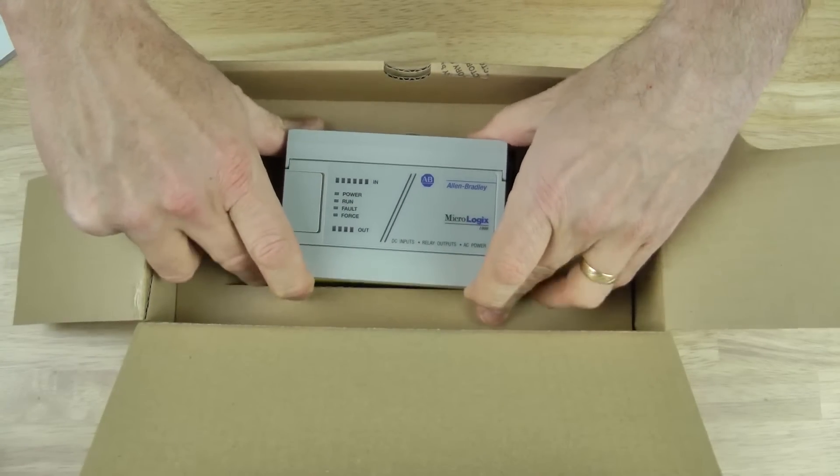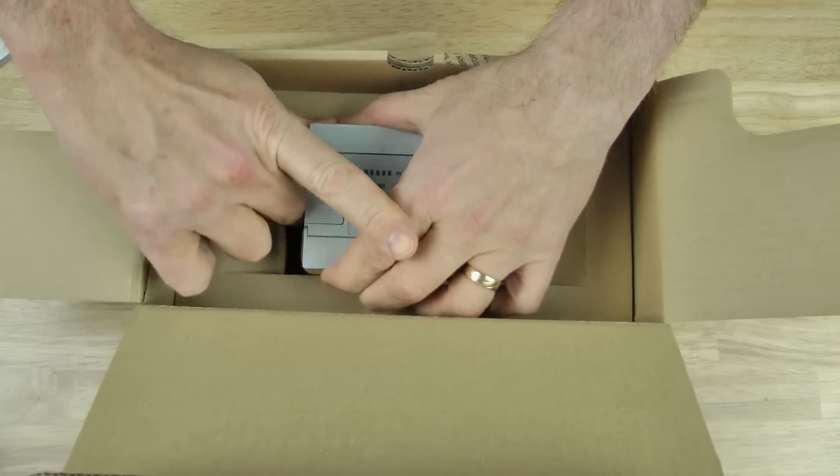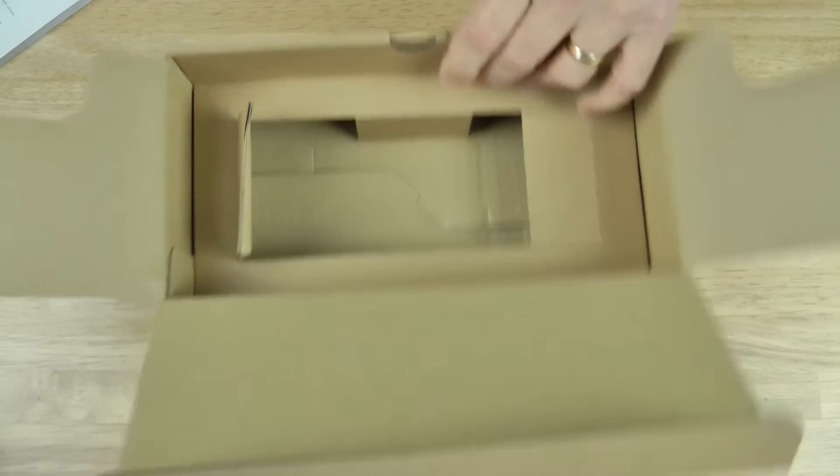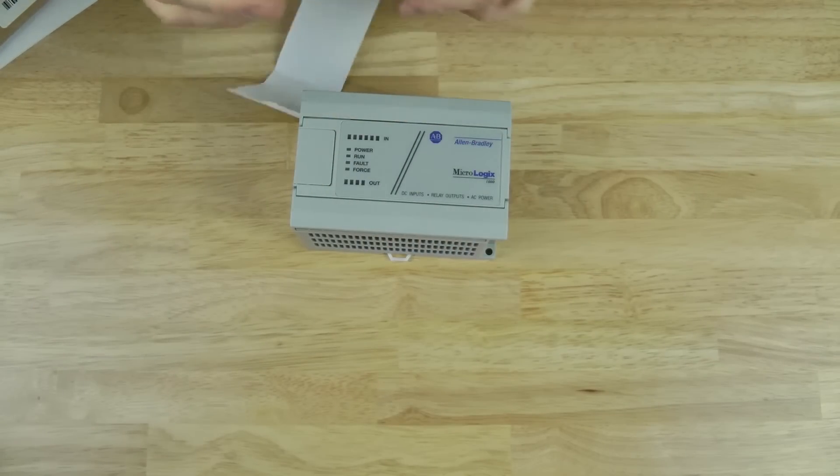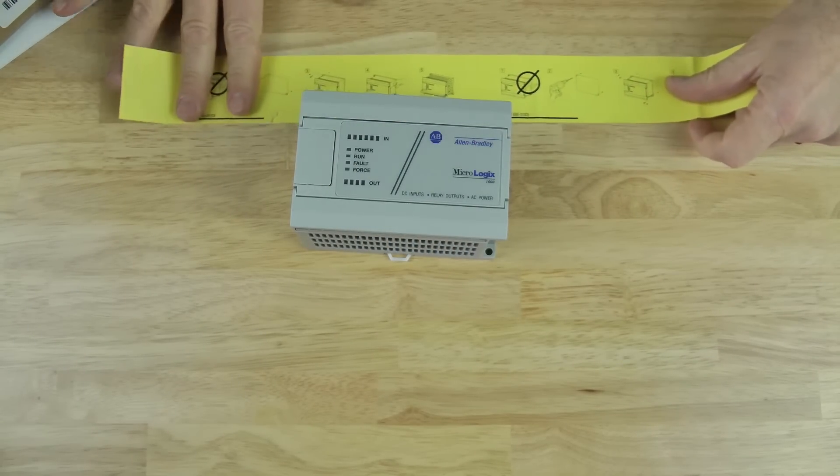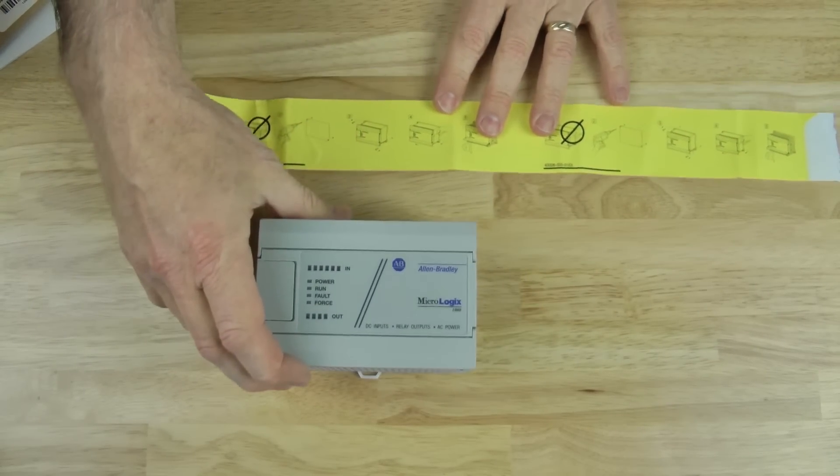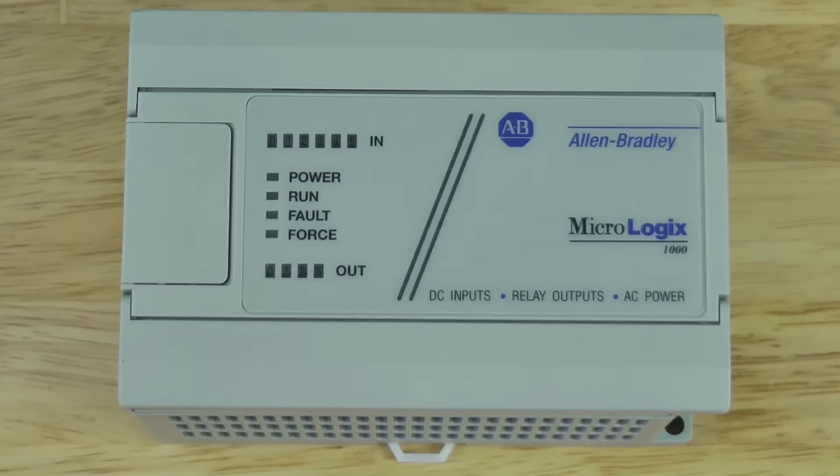Let's get the MicroLogix 1000 out itself. You can see that it comes wrapped in this yellow wrapper. We'll put that aside and let's actually take a look at this MicroLogix 1000. We'll zoom in and take a look at it.